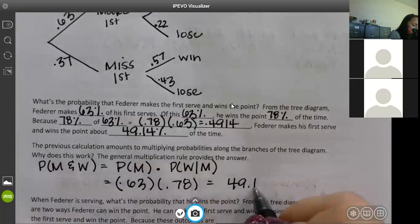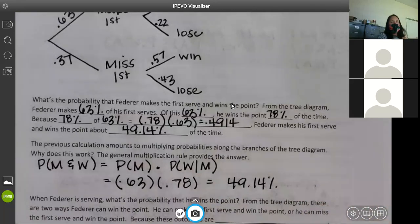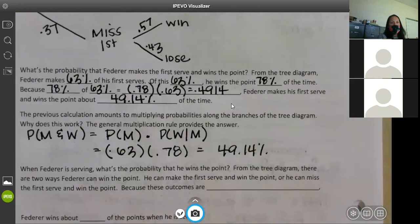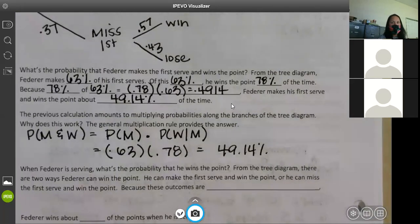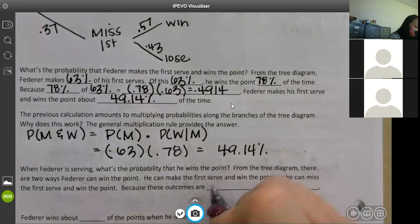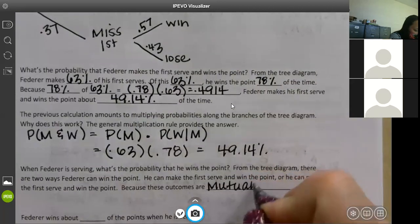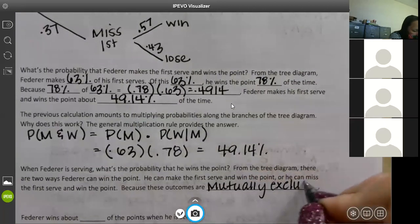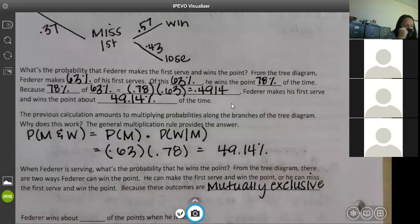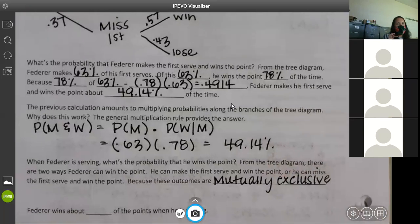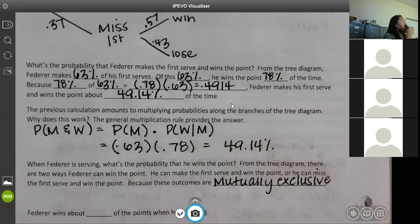So when Federer is serving, what's the probability that he wins the point? From the tree diagram, there are two ways he can win the point. He can make the first serve and win the point, or he can miss the first serve and win the point. And because these outcomes are mutually exclusive, why are they mutually exclusive? You can't do both. You can't do both what? Win and lose the point or make and miss the serve. He can't do it at the same time. So it's one or the other. So since they are mutually exclusive and we're trying to find the or probabilities, we have to add those together.